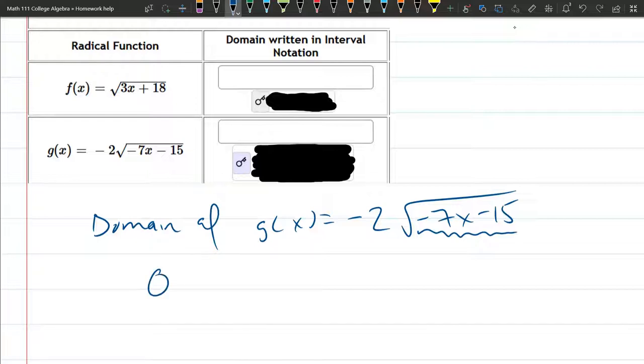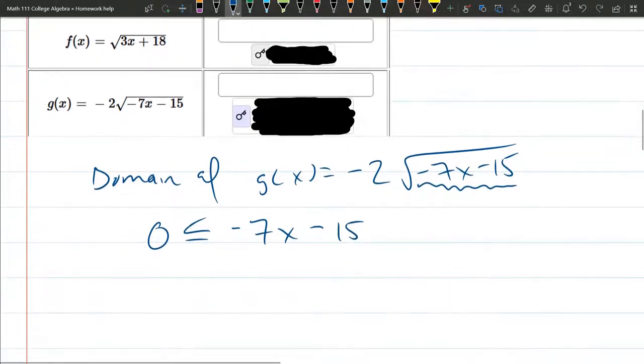So we need to make sure that what I underlined is greater than or equal to zero. So I'm just setting it negative 7x minus 15 is greater than or equal to zero. We're solving for x.